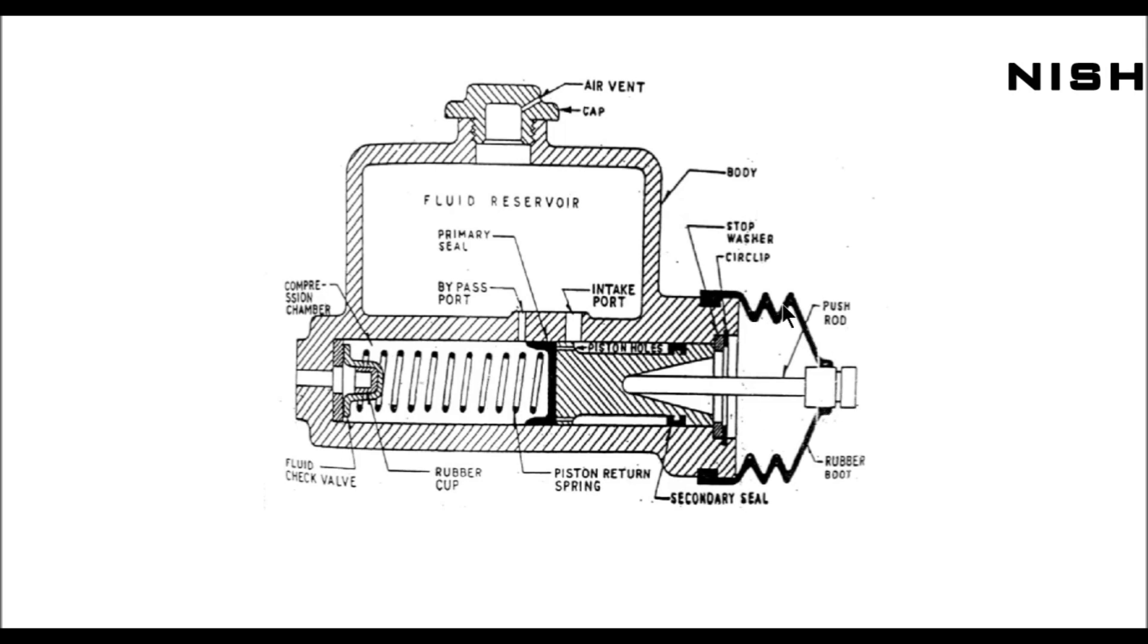This is the push rod, rubber boot to prevent external particles entering the master cylinder. This is the fluid check valve. The check valve opens at a certain pressure. If there is generation of some amount of pressure in the compression chamber, then the check valve is going to open.